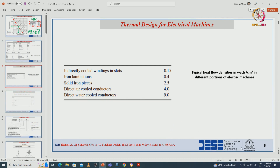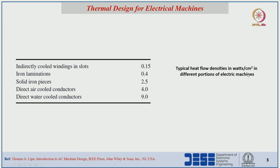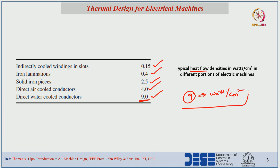The typical heat flow densities in watt per centimeter squared in different portions of electrical machines are: indirectly cooled windings in slots — 0.15, iron laminations — 0.4, solid iron pieces — 2.5, direct air-cooled machines — 4.4, and water-cooled machines — 9. So for high power density machines, we have to design the thermal system with direct water cooling or liquid cooling systems.